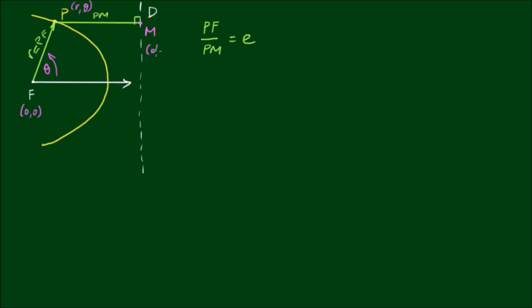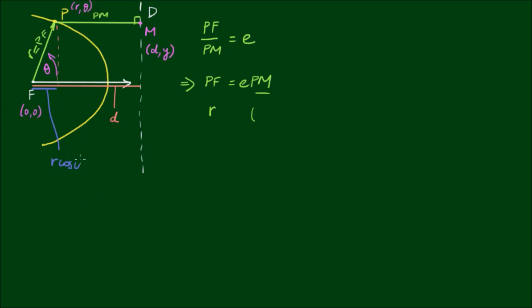For point M, we'll leave this in Cartesian form, so it has Cartesian coordinates of (d, floating y). With the equation PF/PM = E, we can rearrange so that PF = E × PM. PF equals R. Now PM is equivalent to the distance from the focus to the directrix minus the horizontal component of the ray R. The distance marked in red has value D, and the distance marked in blue has value Rcosθ, so the distance PM equals D − Rcosθ.